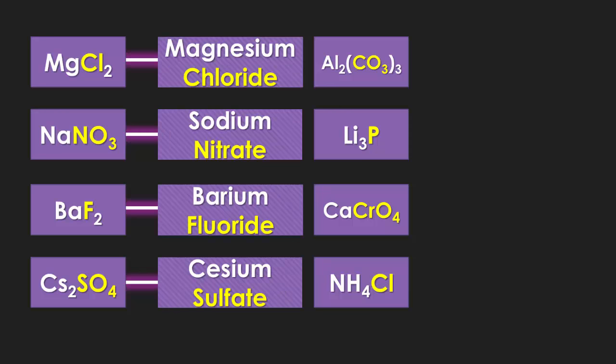So now let's try these examples. You have Al2(CO3)3, Li3P, CaCrO4, and NH4Cl. Do the numbers matter in the name? At the moment, they do not matter. They will matter in a little bit when we talk about transition metals and ionic bonds.